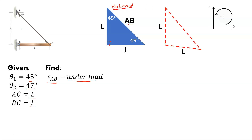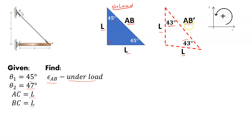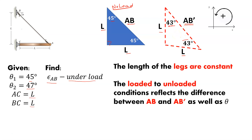We also have a loaded condition. The legs don't change, but with the bar loaded we get a change in the two angles. We end up with a 43-degree angle. It's still an isosceles triangle, so both base angles are the same, and we have a new hypotenuse length I'm calling AB prime. The angles go from 45 to 43, and the length stretches from AB to AB prime. The loaded versus unloaded condition reflects the difference between AB and AB prime as well as theta.